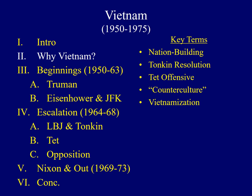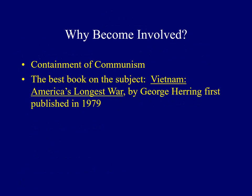The question of why the United States became involved in the Vietnam War is a good place to begin. The best explanation is simple: it became involved to contain the spread of communism into new areas. The best book on this subject was written by George Herring and first published in 1979, titled America's Longest War. A lot of information from this lecture comes from this book, and I'd encourage people to read it.